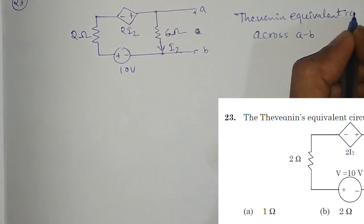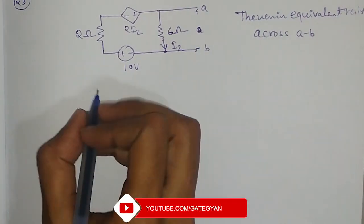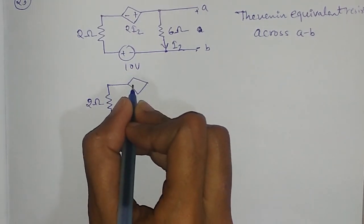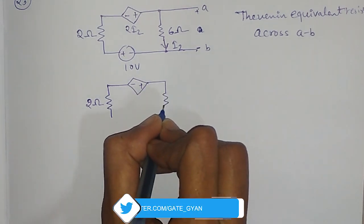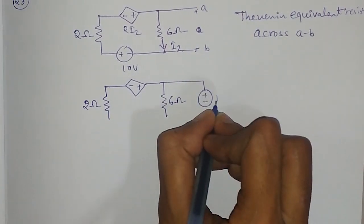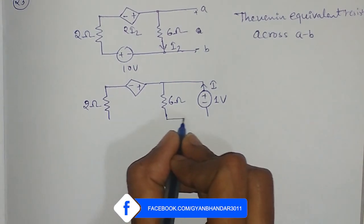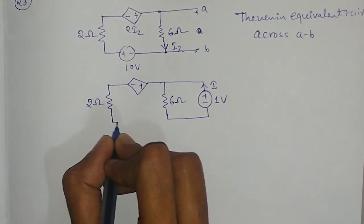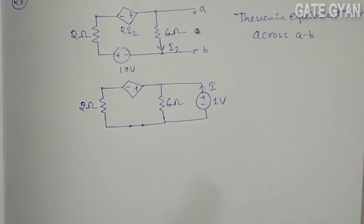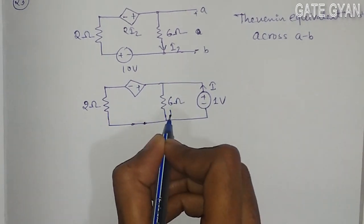To find the Thevenin equivalent resistance, I will apply the method of putting 1 volt and a current of I ampere. To get the Thevenin equivalent, the source voltage gets short circuited — we always short circuit the voltage source and open circuit the current source. So here it will get short circuited. Now this current is I2 and this voltage is 2I2.